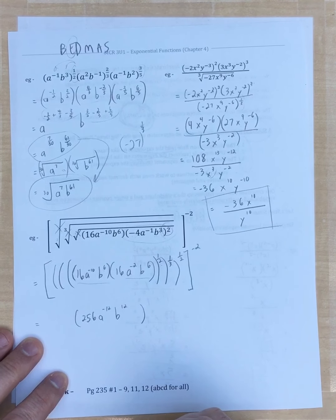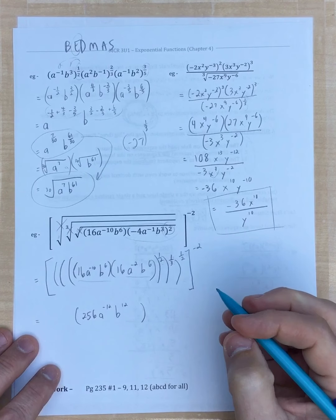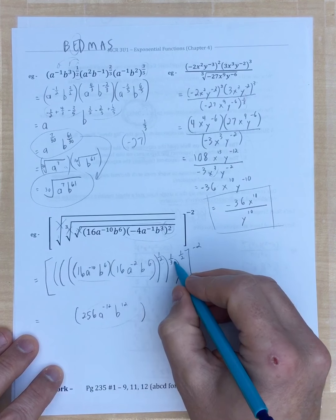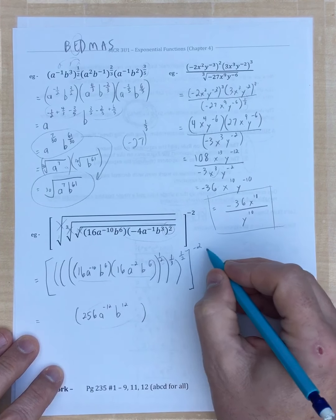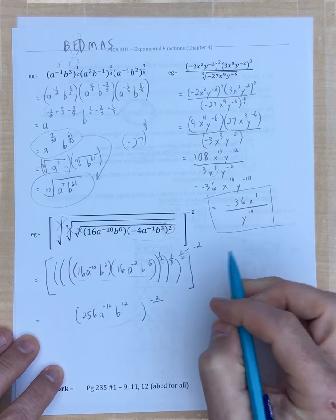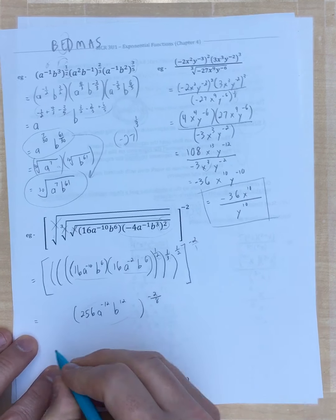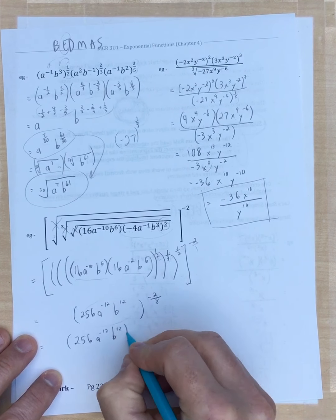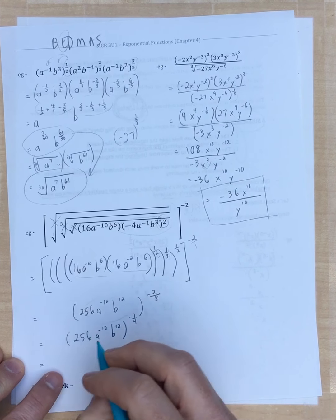Now combining: sixteen times sixteen is two hundred fifty-six; a to the negative ten times a to the negative two adds to a to the negative twelve; b to the six times b to the six adds to b to the twelve. The full expression is two hundred fifty-six a to the negative twelve b to the twelve, raised to one half times one third times one half times negative two. Multiplying all exponents straight across: the combined exponent is negative one fourth.